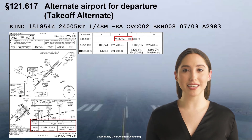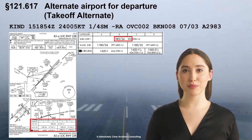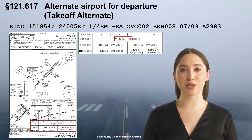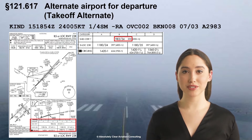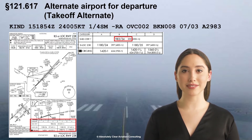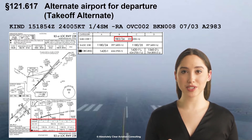To determine the need for a takeoff alternate, first determine the applicable approach minimums for an instrument approach to a suitable runway at the departure airport which meets the requirements for your aircraft. Select a runway which would yield a headwind and ensure that an instrument approach to that runway is operational by consulting the NOTAMs. For example, runway 23 would be suitable for winds from 240 degrees.